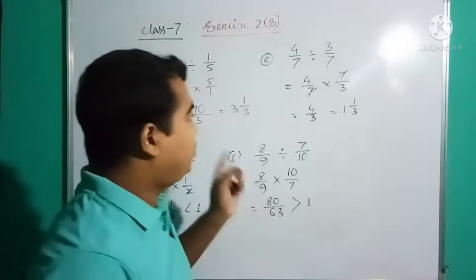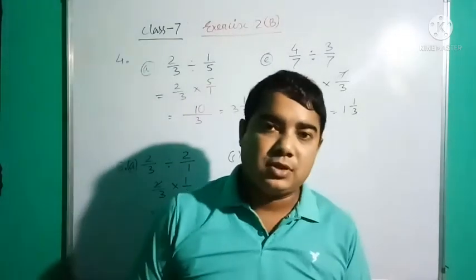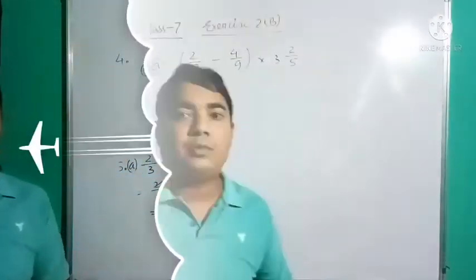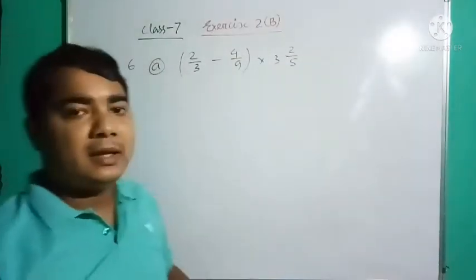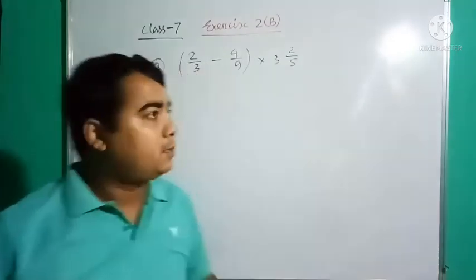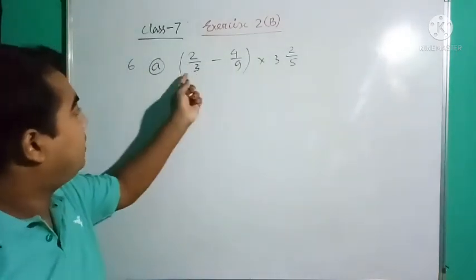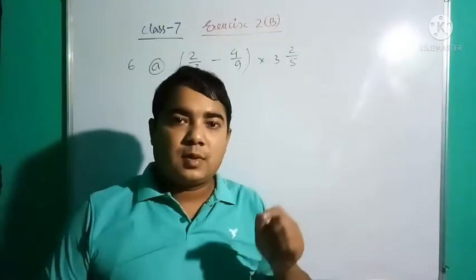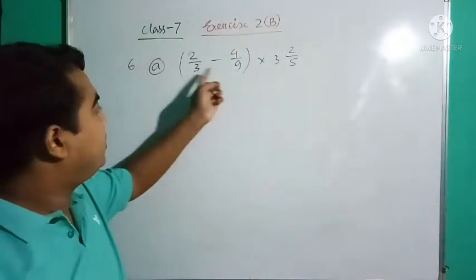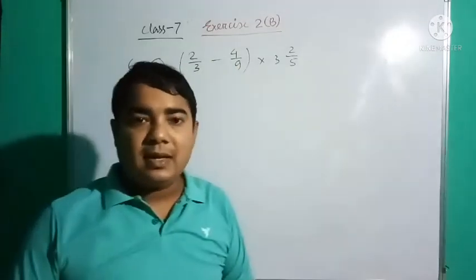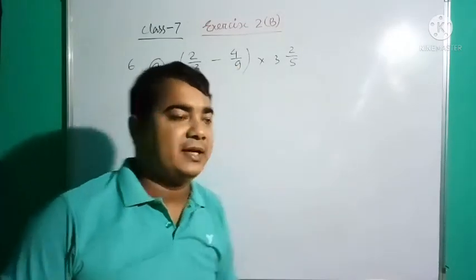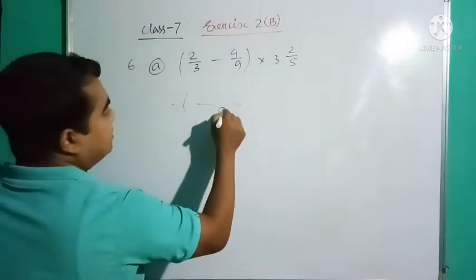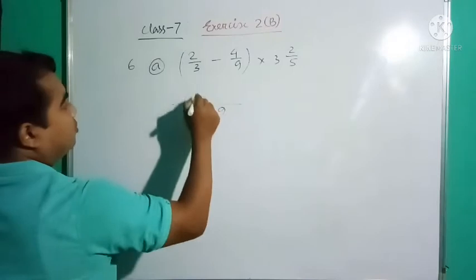Now proceed to question number six. Since it's simplified, that means find the value. See here, one bracket, multiply given, and one, two, three fractions given. So always apply BODMAS. Now see, two fractions given, so inside the bracket, first take LCM and form a single fraction.